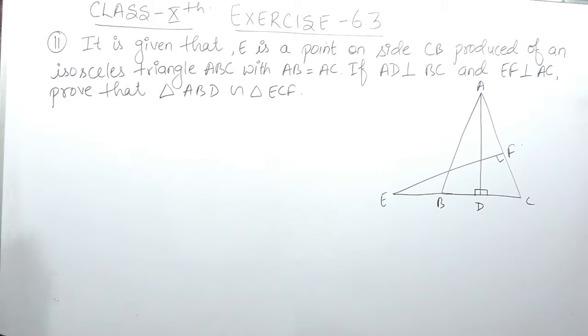The question says it is given that E is a point on side CB produced of an isosceles triangle ABC with AB equals AC, and if AD is perpendicular to BC and EF is perpendicular to AC, then you have to prove that triangle ABD is similar to triangle CEF.